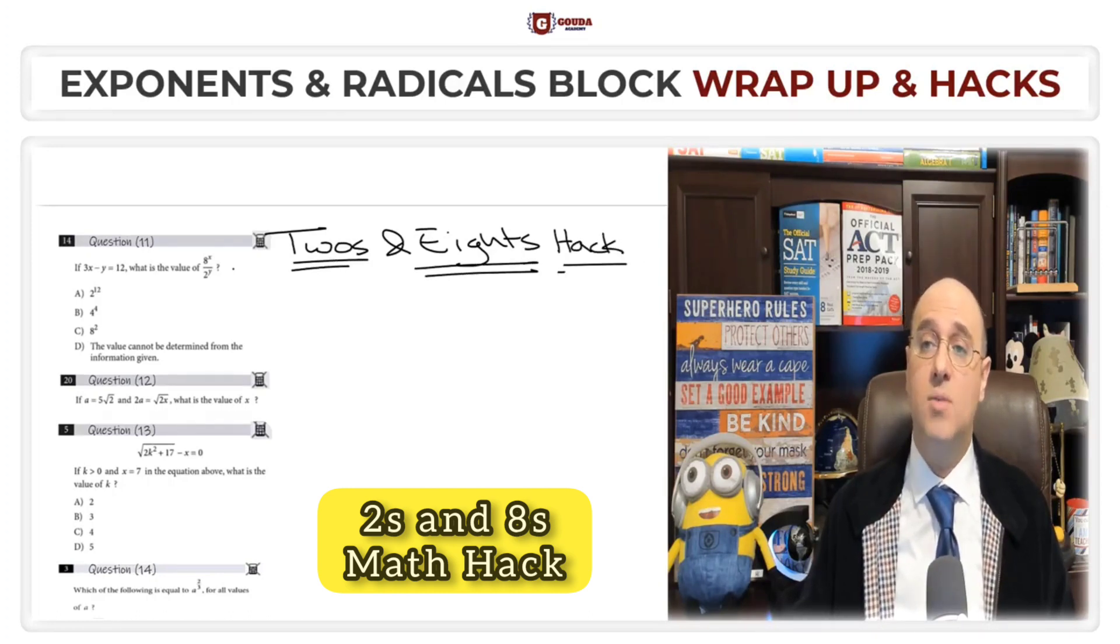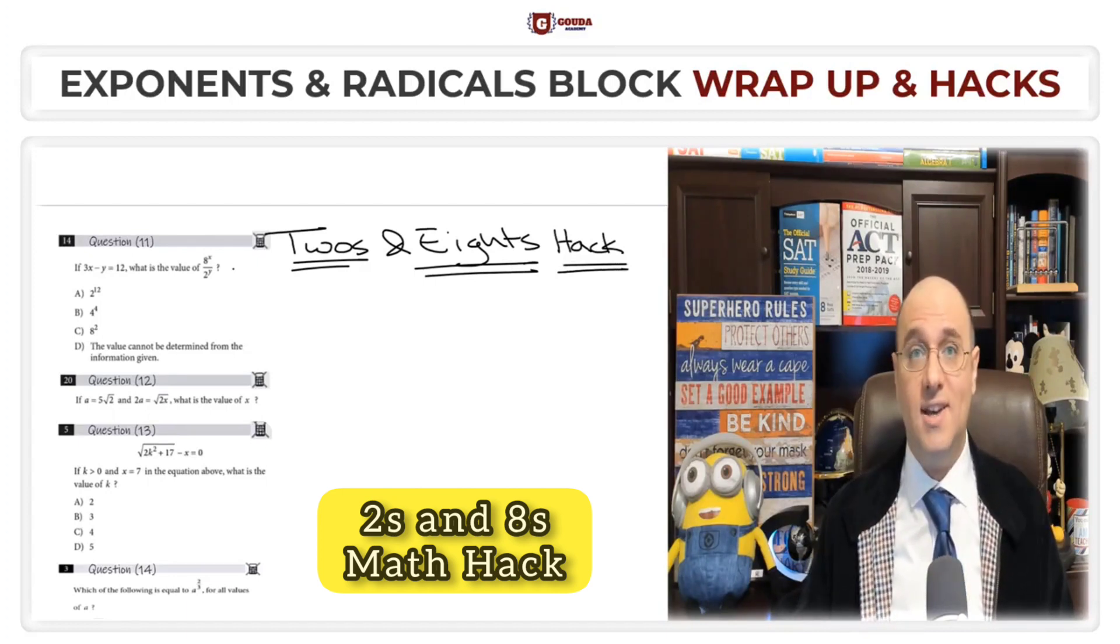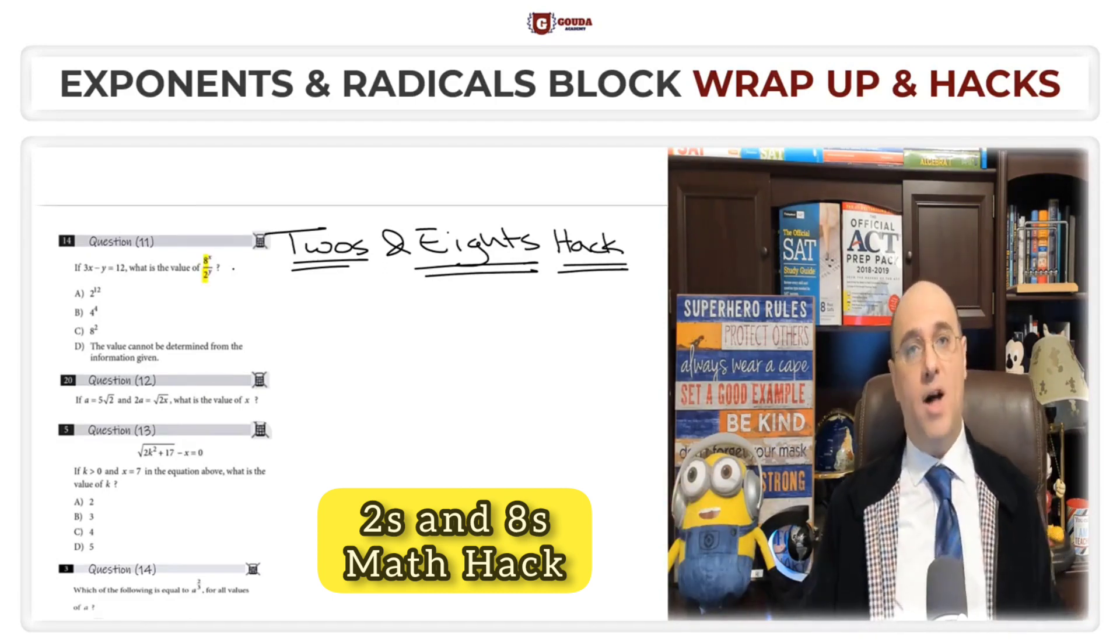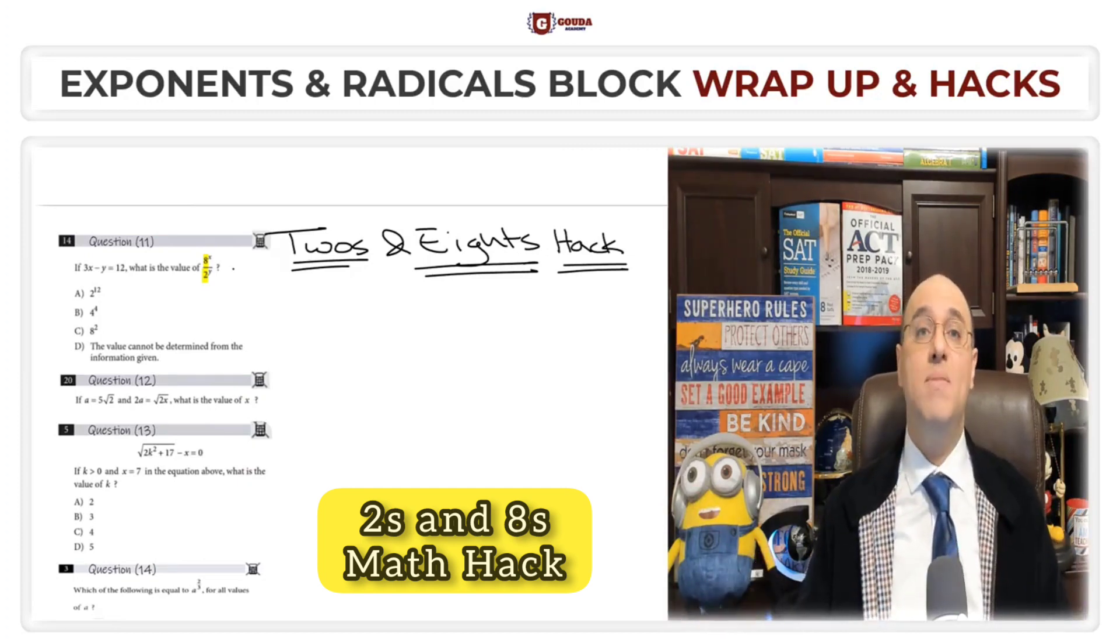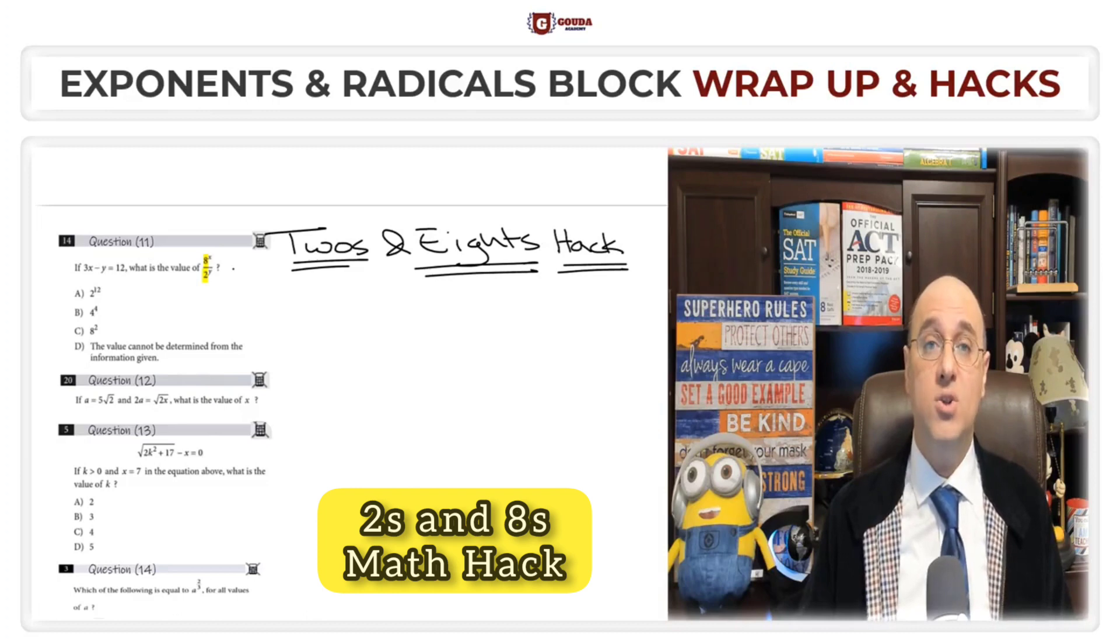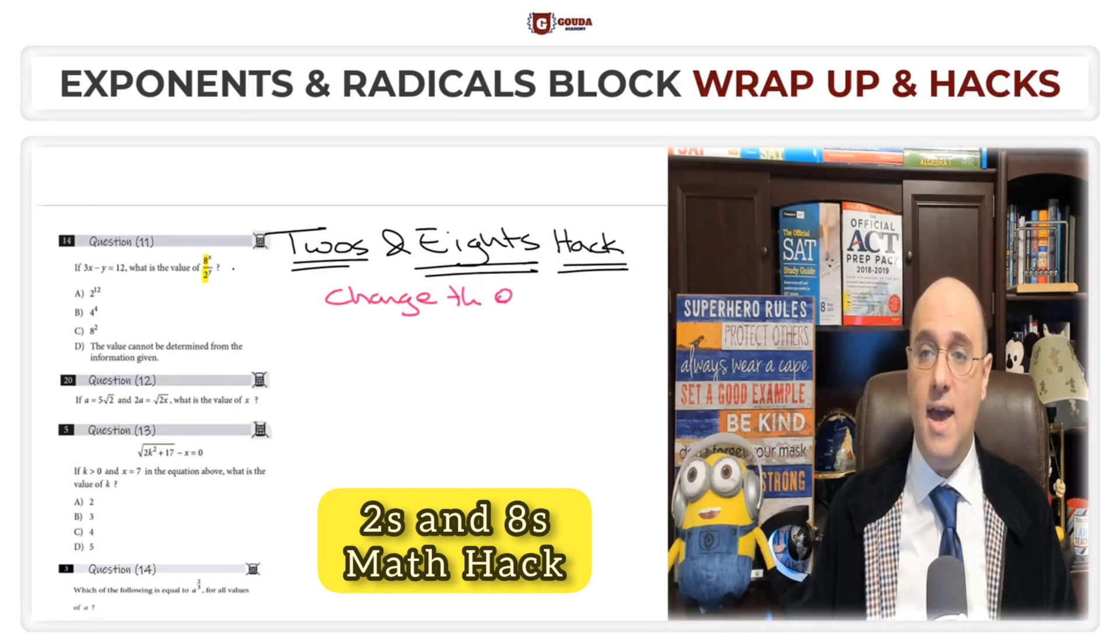The twos and eights hack simply says that when you find in the question in front of you, you have a 2 and you have an 8 on top of each other or next to each other, the important thing is there's a two and an eight in the exponents, know right away that what you need to do is change the eight into two to the power three.